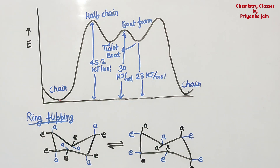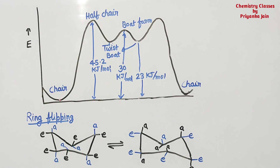So this is all about the conformations of cyclohexane. But it doesn't end here — there is one more important thing: what happens when there is substitution, whenever we see monosubstituted or disubstituted cyclohexane. In those cases we have to find out the most stable conformations and most stable isomers. That we will see in our next video. Thank you.